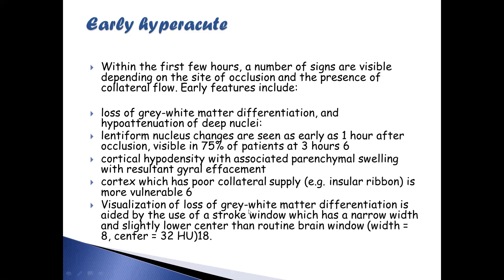If you want to look at the loss of gray-white matter differentiation, you need to use the stroke window, not the brain window. So in hyperacute infarction there will be loss of gray-white matter differentiation, cortical hypodensity, parenchymal swelling, and resultant sulcal effacement.